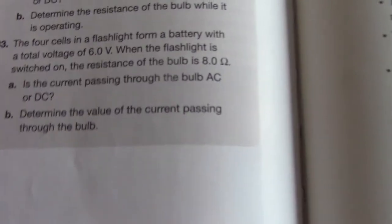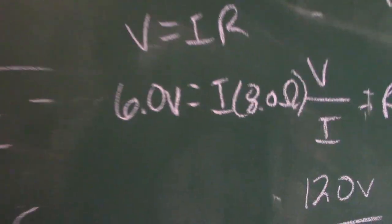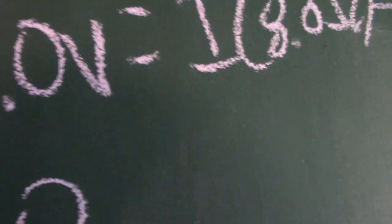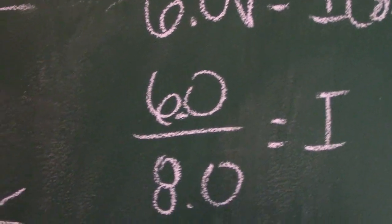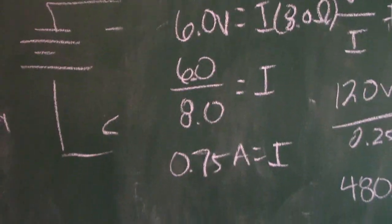It's asking for current using V equals I times R. Voltage is six volts and resistance is eight ohms. Rearranging to solve for I: I equals V over R, so six divided by eight equals 0.75 amps.